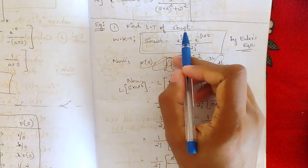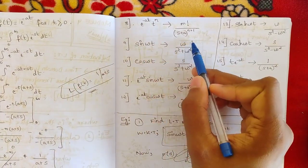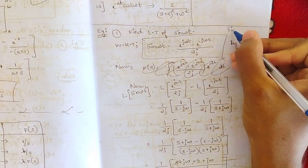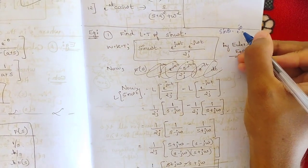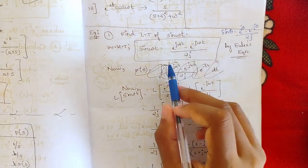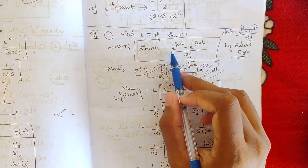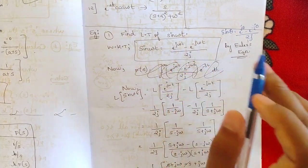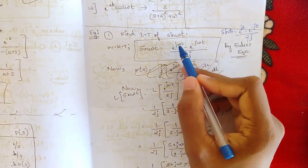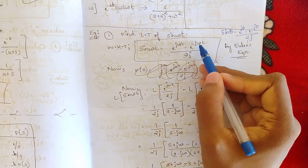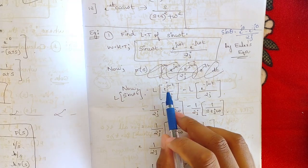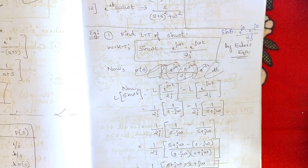Now let us find the Laplace transform of sin(ωt) and verify we get ω/(s²+ω²). We know that sin(θ) = (e^(jθ) − e^(−jθ)) / 2j. Replacing θ with ωt: sin(ωt) = (e^(jωt) − e^(−jωt)) / 2j. Taking the Laplace transform and applying the linearity property: L{sin(ωt)} = (1/2j) · [L{e^(jωt)} − L{e^(−jωt)}].